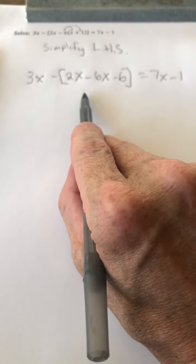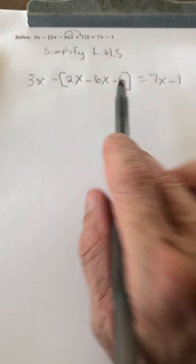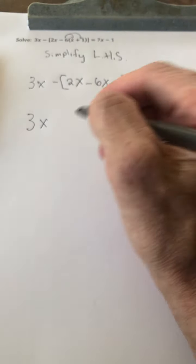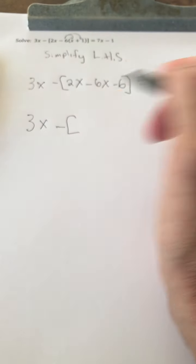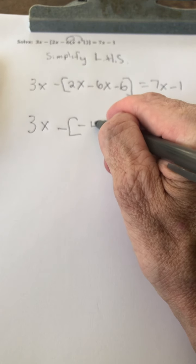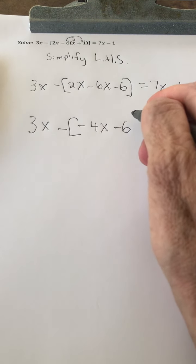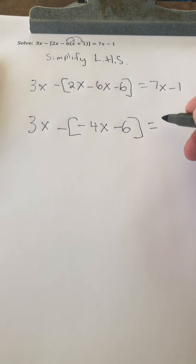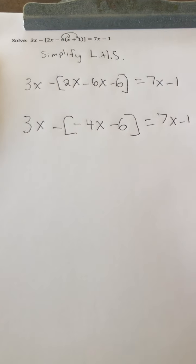So now we're going to combine like terms within these grouping symbols, within these brackets. So we have 3x minus the quantity negative 4x minus 6, and again, the right-hand side does not change. The right-hand side is 7x minus 1.